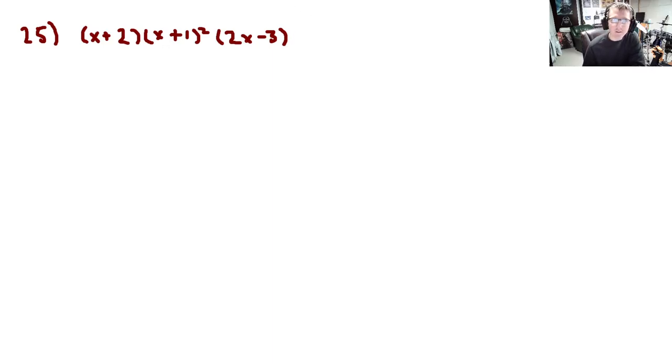The first thing we need to answer is, what are the zeros? And in order to find these, we just take each factor and we set it equal to zero and solve. So, we're going to take x plus 2 equal to zero, solve it. x plus 1 equal to zero, solve it. 2x minus 3, set it equal to zero, and solve it.